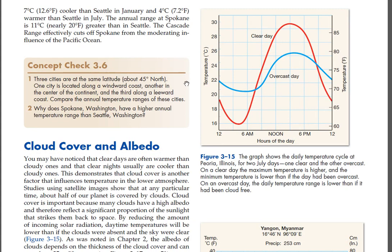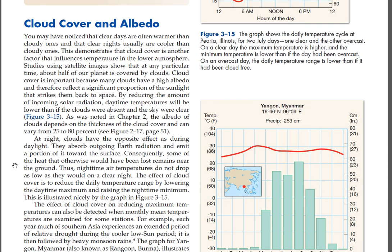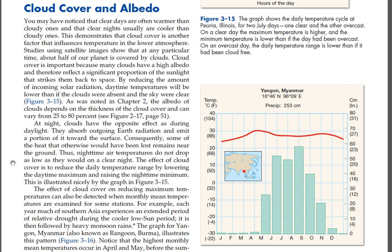As was noted in Chapter 2, the albedo of clouds depends on the thickness of the cloud cover and can vary from 25 to 80 percent. At night, clouds have the opposite effect as during daylight. They absorb outgoing Earth radiation and emit a portion of it toward the surface. Consequently, some of the heat that otherwise would have been lost remains near the ground. Thus, nighttime air temperatures do not drop as low as they would on a clear night. The effect of cloud cover is to reduce the daily temperature range by lowering the daytime maximum and raising the nighttime minimum.